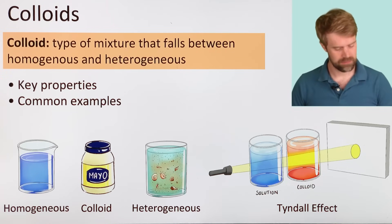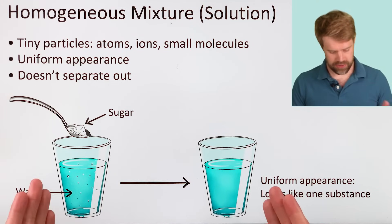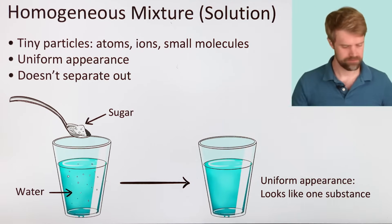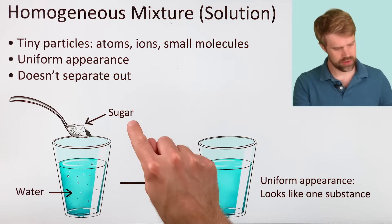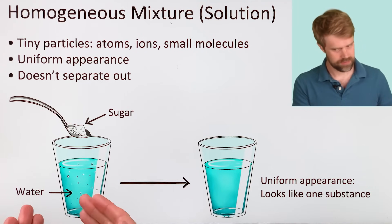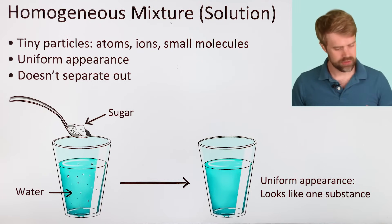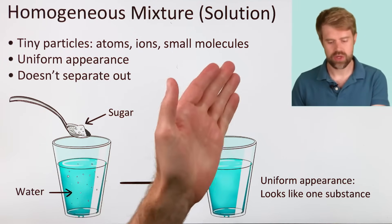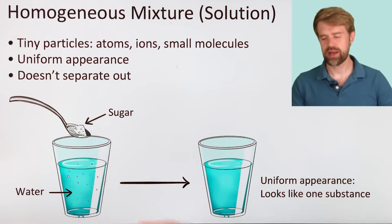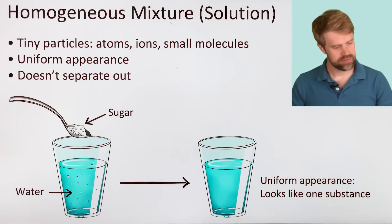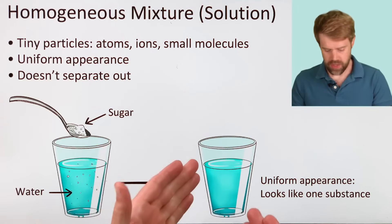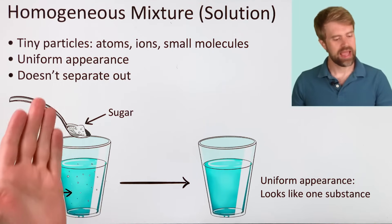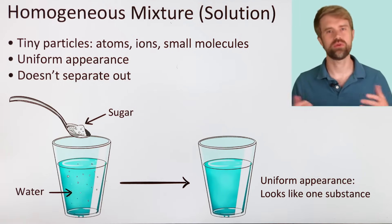First, a touch of review on types of mixtures. Here's a homogeneous mixture, more commonly called a solution. An example is sugar dissolved in water. In a solution, the dissolved particles are very tiny — they might be atoms, ions, or small molecules — and they spread out evenly, giving solutions a uniform appearance. A solution looks like one substance, and it doesn't separate out or settle out over time.